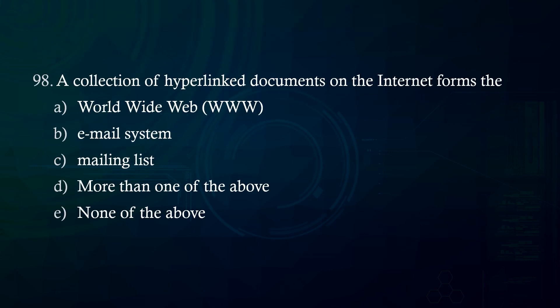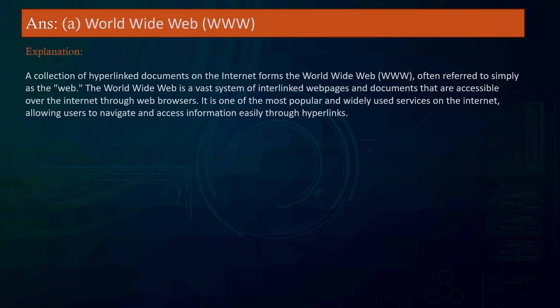A collection of hyperlinked documents on the internet forms the: A. World Wide Web (WWW). B. Email system. C. Mailing list. D. More than one of the above. E. None of the above. Answer: World Wide Web (WWW). Explanation: The World Wide Web is a vast system of interlinked webpages and documents accessible over the internet through web browsers, allowing users to navigate information easily through hyperlinks.